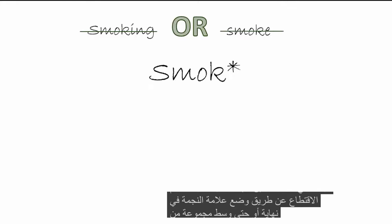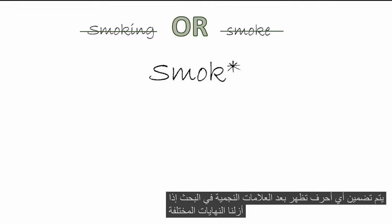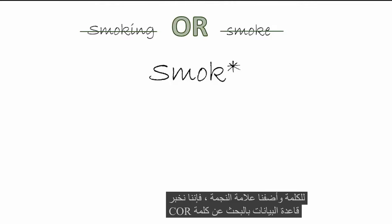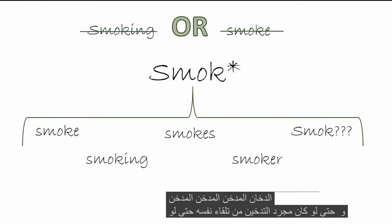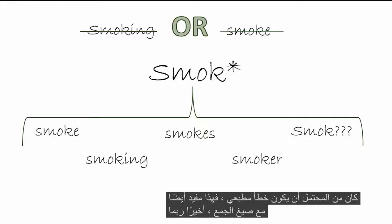Instead of searching both words, we can search using truncation — by putting an asterisk at the end or even the middle of a set of letters. This represents a wild card, so any letters appearing after the asterisk are included in the search. If we remove the different endings of the word and add an asterisk, we are telling the database to look for the core word no matter the ending. Our results will now bring back smoke, smokes, smoking, smoker, and even just 'smok' by itself, even if it's probably a typo. This is also useful with plurals. Finally, you may have noticed that we put the phrase 'smoke-free' in quotes. This is another database trick which tells the database that these words have to be found together. Quotes are extremely useful for phrases or specific titles.